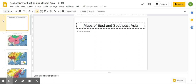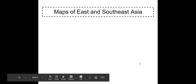Hi everyone, so this resource includes maps of East and Southeast Asia. When you open Google Slides, if you want to see the maps a little bit bigger, you just need to click on the present button.